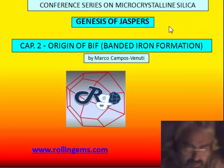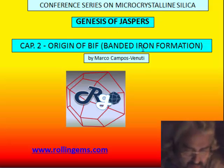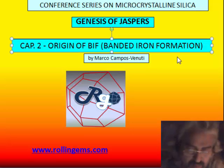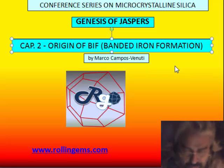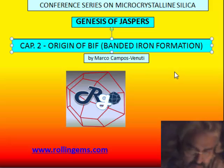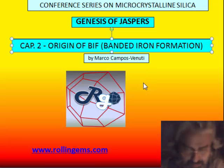In this chapter about the genesis of jasper, we will talk about the origin of a very special kind of jasper. It is called BIF, which stands for banded iron formation. It is a formation of hematite or magnetite widespread on all continents, and very important for mining operations looking for iron, where this iron is banded and intercalated with red jasper.